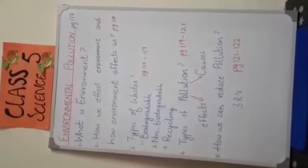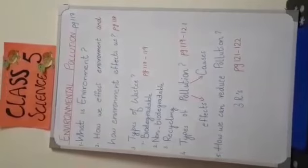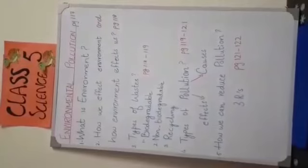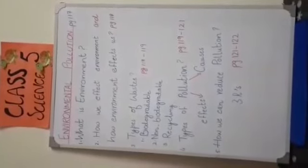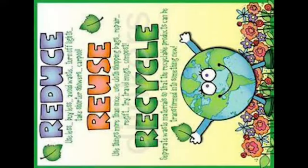Now the question arises that how we can control or reduce pollution. Come on page number 121. We can reduce pollution by following the 3R rule that says reduce, reuse, and recycle as far as possible.